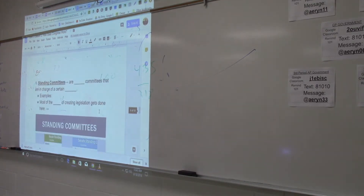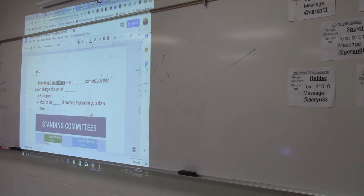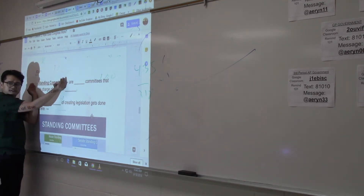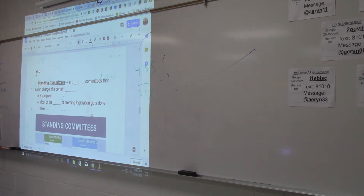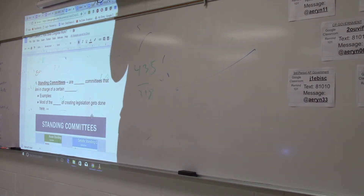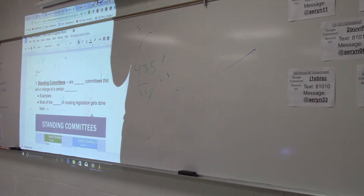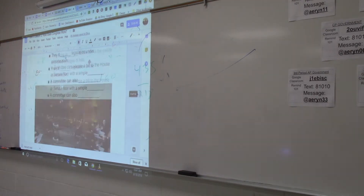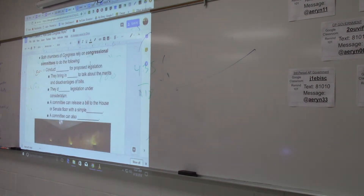There are four different types of committees you need to know. The most common — put a star on this — is the standing committee. Standing means permanent. These are permanent committees in the House of Representatives. What do committees do? They conduct hearings for proposed legislation. When a bill is assigned to them, they call for a hearing and talk about the bill.